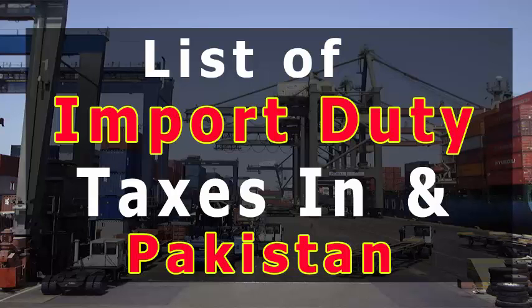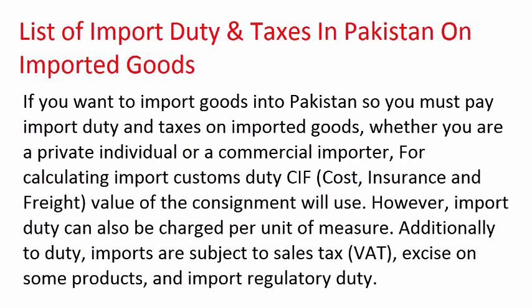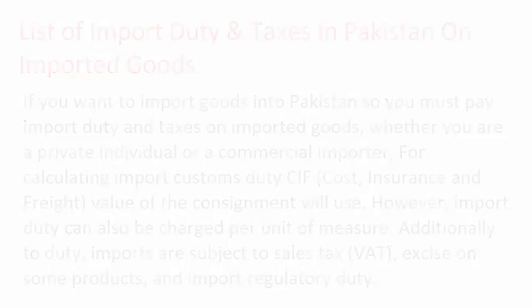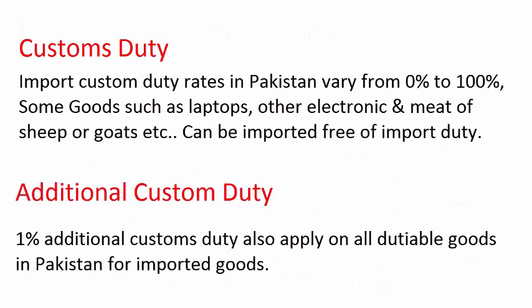It has been observed with great concern that at the time of filing of GD for consignments originating from South Korea, some importers are erroneously selecting a country code of Democratic Republic of Korea — North Korea — which is currently under UN sanctions. This is not only causing data integrity problems but may also have serious repercussions for the importers in the shape of imports blockade and follow-up investigations. In view of the seriousness of the issue, it is therefore advised to select the correct country code at the time of filing of GD to avoid any inconvenience.